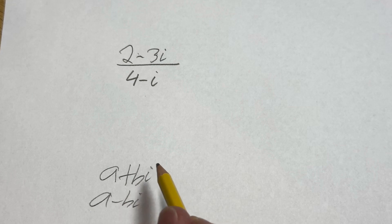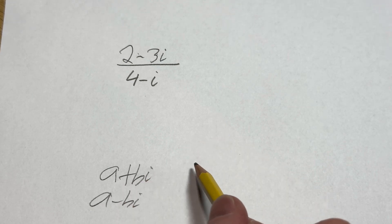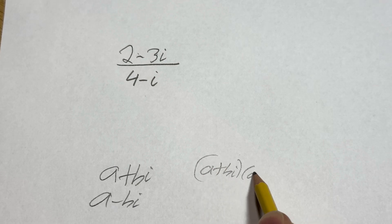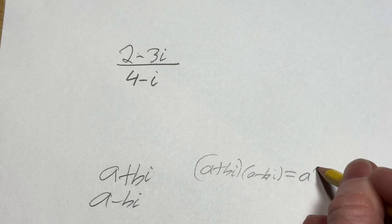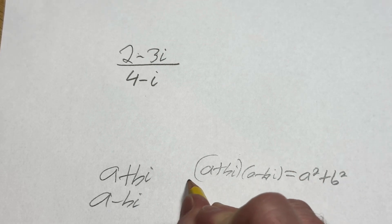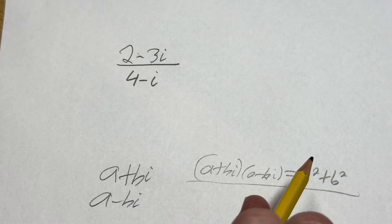And something cool happens when you multiply by the conjugate. If you take a plus bi and you multiply it by a minus bi, you just get a squared plus b squared. You can verify that by multiplying it out if you like, but that's what you get.